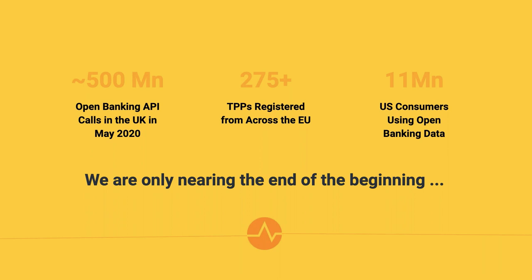The UK reached one million consumers using open banking-based applications in January, and this number is expected to double within the next year — more than twice as fast as it grew to one million. Close to 100% of current accounts in the UK are now covered by open banking. A lot of the third-party applications being developed are around mortgages, personal lending, personal wealth management, comparison services, and other services built using data available through open APIs.